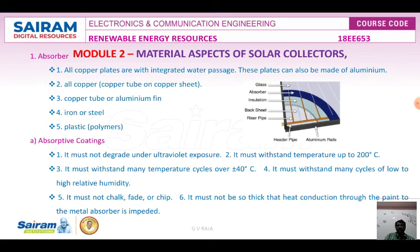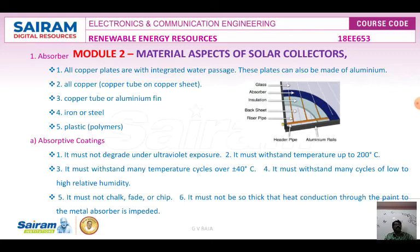The absorber solar plate is most frequently used. Materials used include copper plates with integrated water passages or roll bond type. These plates are made of aluminium; in solar heating systems, aluminium is covered with a copper plate inside an evacuated tube. Copper tubes or aluminium fins can be used as an absorber. Iron, steel, or plastic polymers can also be used.